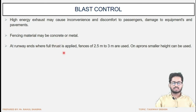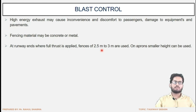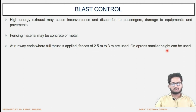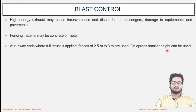At runway ends where full thrust is applied and hot exhaust gas is expelled with high force, the fences are of 2.5 to 3 meter height. At aprons where aircraft are parked, the hot exhaust gas will also be expelled from the aircraft, but at aprons smaller-size fences will work because the thrust is not as forceful as in the case of the runway.